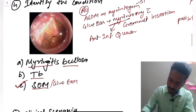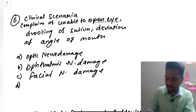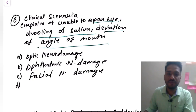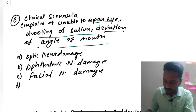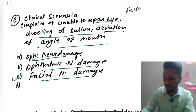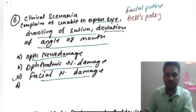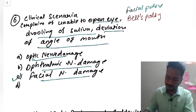Next, a clinical scenario: a patient is unable to open his eye, has drooling of saliva, and deviation of the angle of the mouth. This is a clear-cut case of facial nerve palsy. Options were optic nerve damage, ophthalmic nerve damage, and facial nerve damage. Also remember Bell's palsy, which is idiopathic facial nerve palsy — diagnosed when all other causes are ruled out.